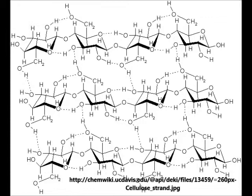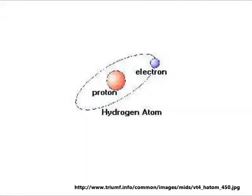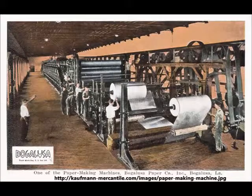Later in November, we discussed the drawing of atoms and different elements and isotopes. The elements of cellulose and paper are carbon, hydrogen, and oxygen, which we learned in December were all non-metals.